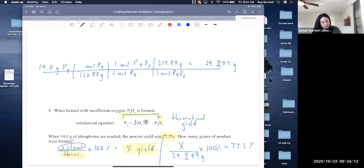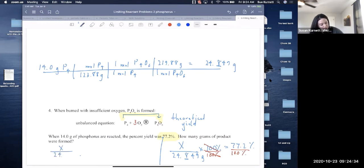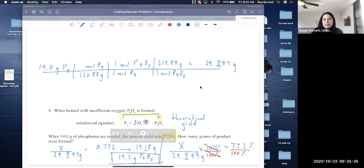So for the math, the first thing I need to do is get rid of 100% by dividing both sides by 100%. And then I get 0.772 on the right, and there's no percent sign and that's good. Now I'm going to multiply both sides by 24.8. And I got 19.18 grams. I'm only good to three sig figs, so 19.2 grams. Okay, that's all I got. You're welcome to stay or go.